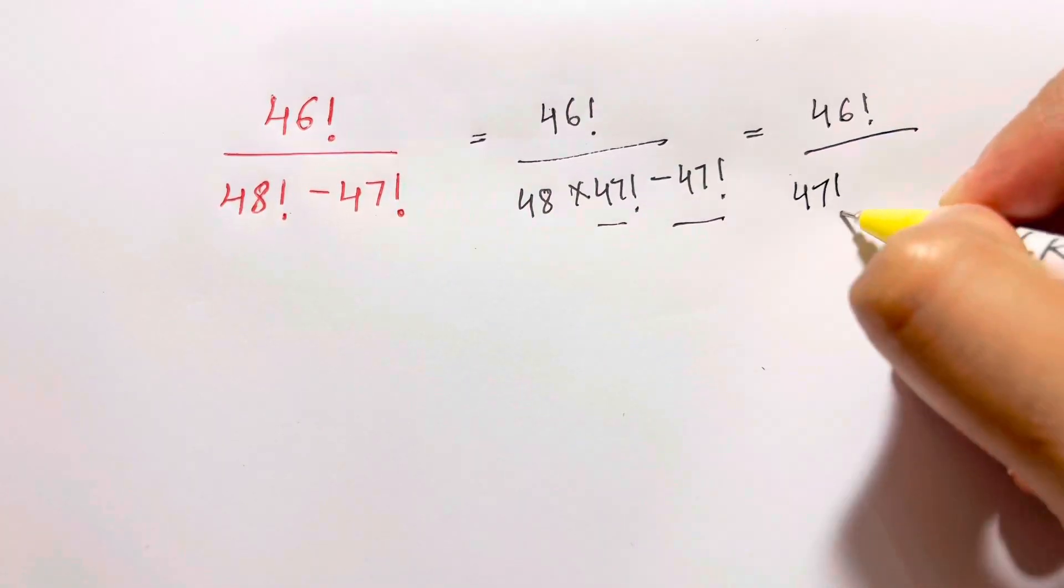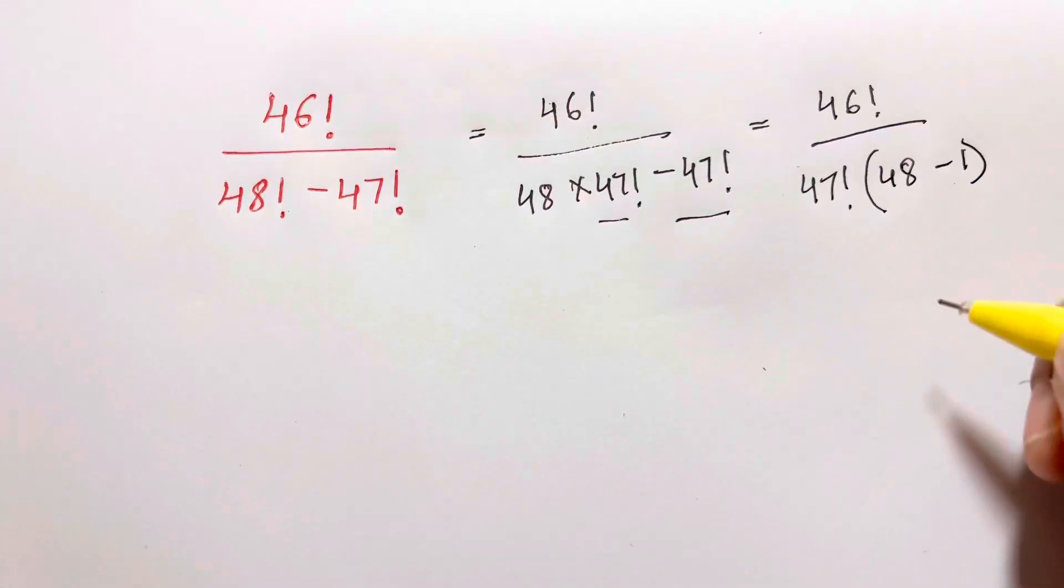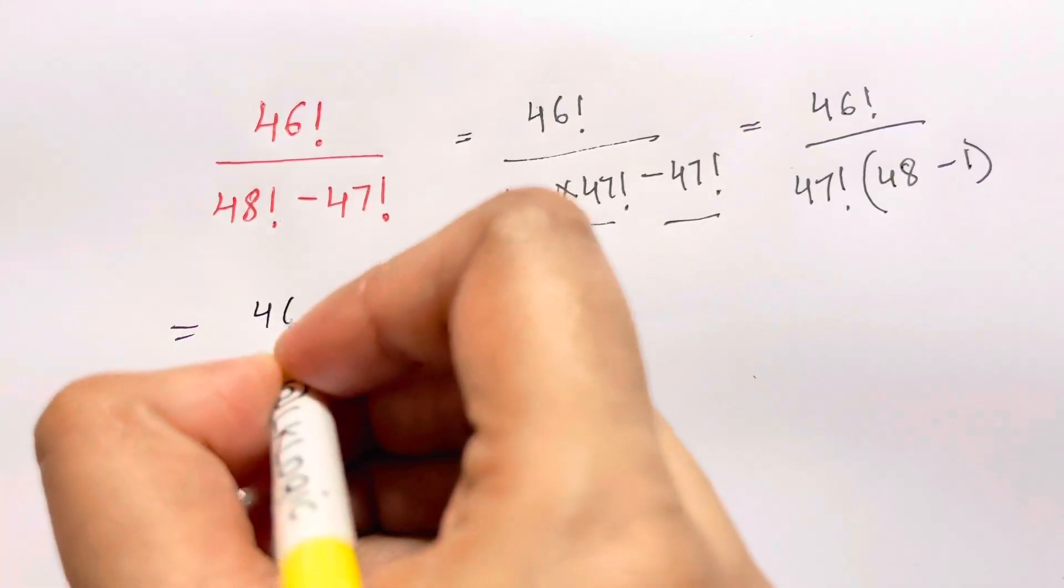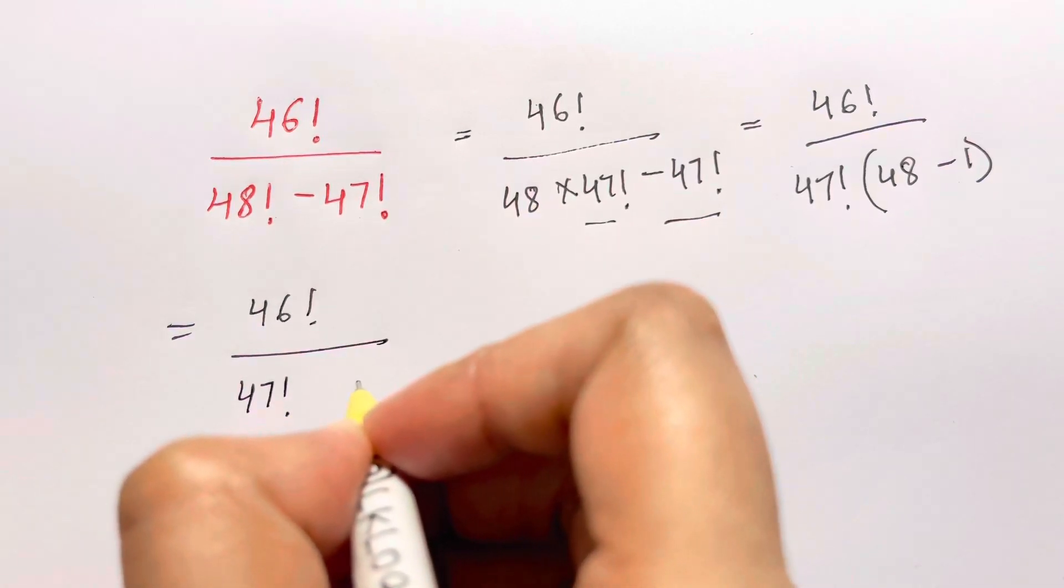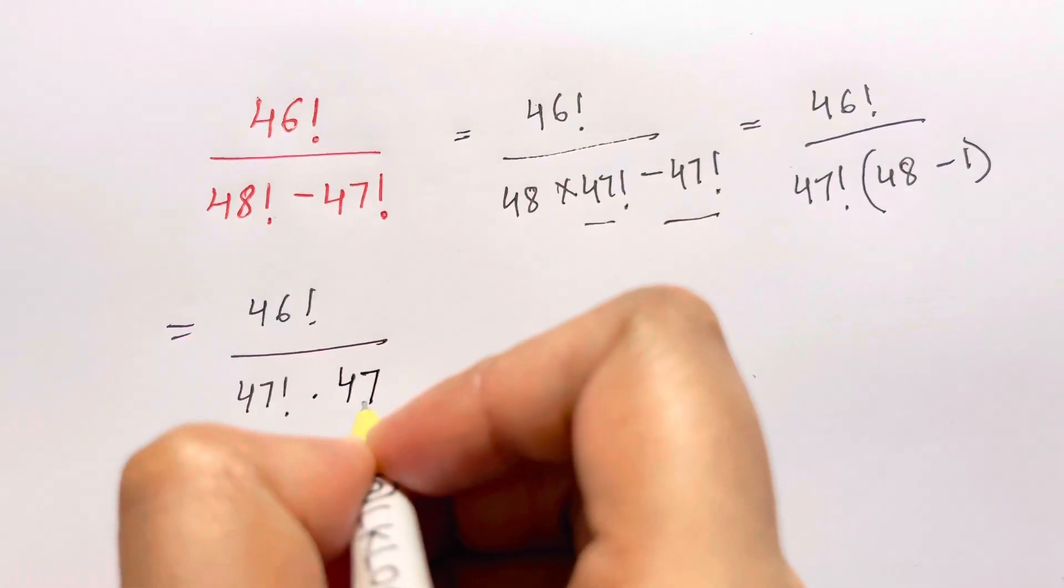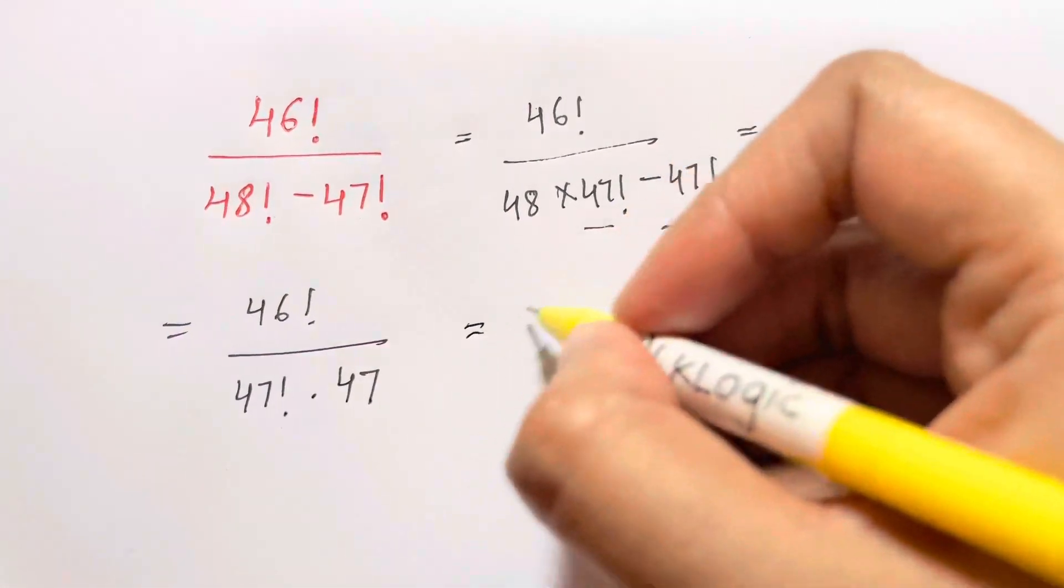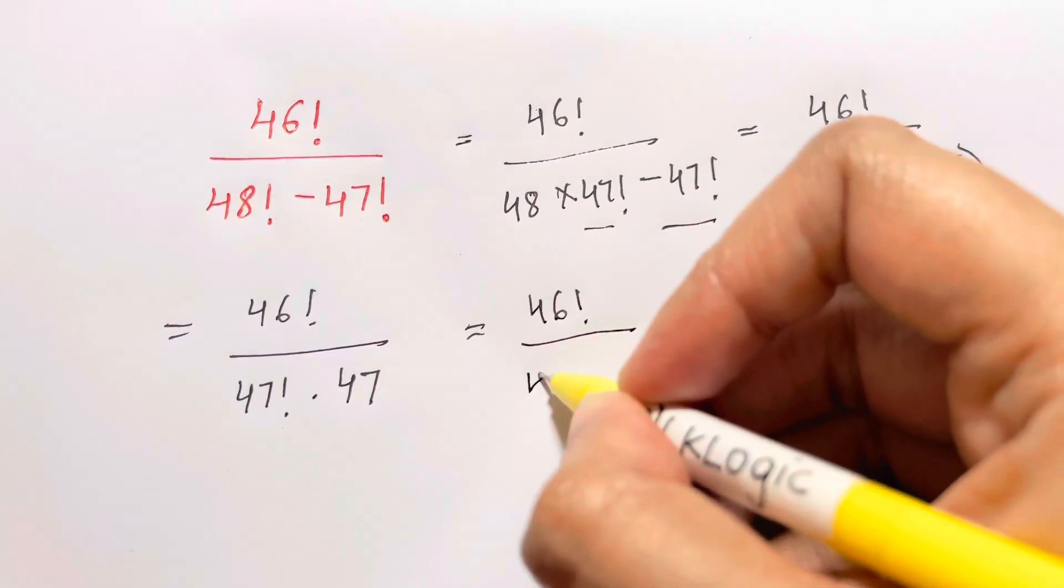Now what do we get here is 46 factorial over 47 factorial. 48 minus 1 is 47 times 47. So here 47 factorial can be written as 46 factorial over 47 times 46 factorial times 47.